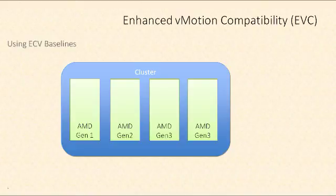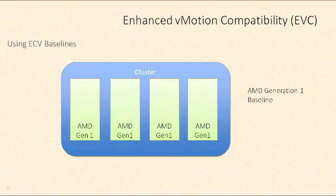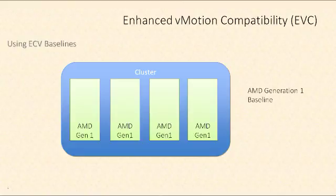Looking at our slide, we have four ESXi hosts, and we've chosen a baseline that matches up with the host with the smallest feature set: AMD generation one. The end result is that features not supported on generation one are not available. Now my virtual machines get an identical experience on any of these hosts and vMotion compatibility is achieved. That's one of the big benefits of EVC — it can make hosts that are normally not vMotion compatible, vMotion compatible.